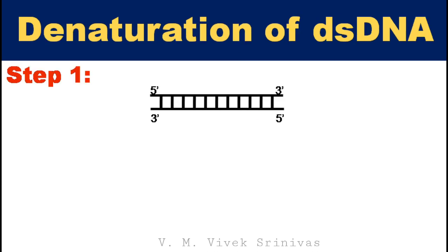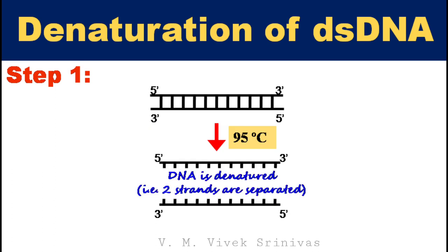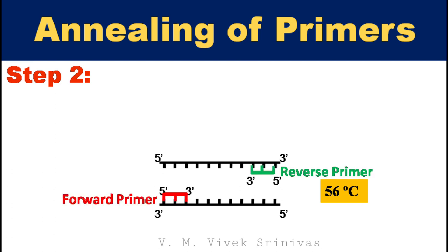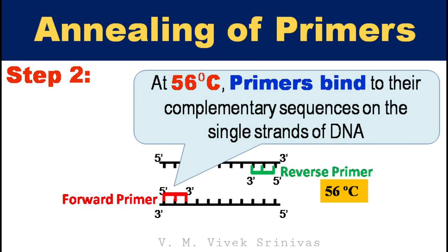Step 1: Denaturation. At high temperature — that is, 95 degrees Celsius — the double-stranded DNA is denatured, meaning the two strands are separated. Step 2: Annealing. At low temperature — that is, 56 degrees Celsius — the two specific primers bind to their complementary sequences on the single strands of DNA.